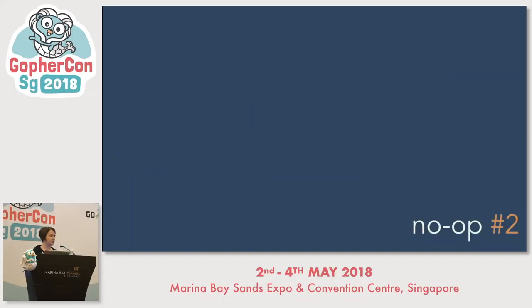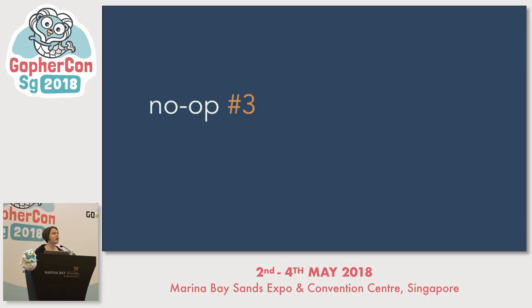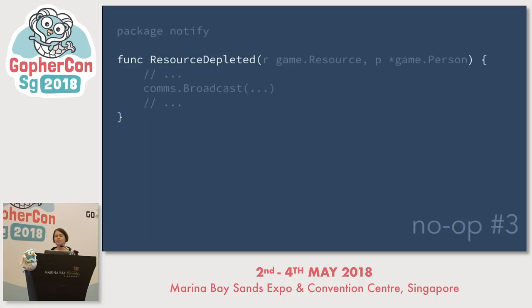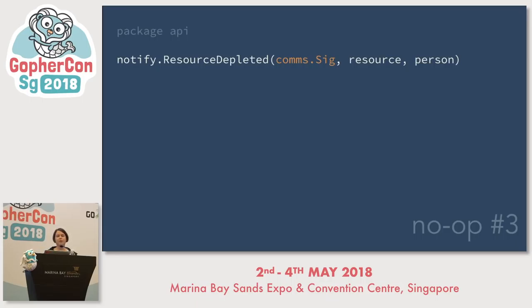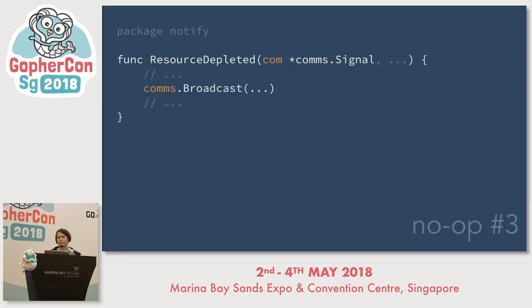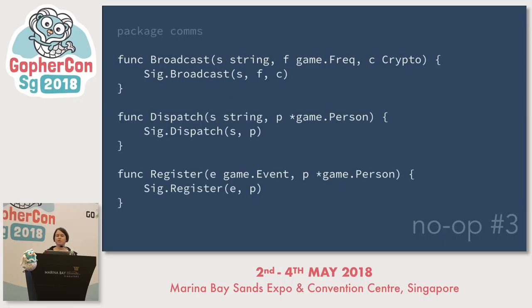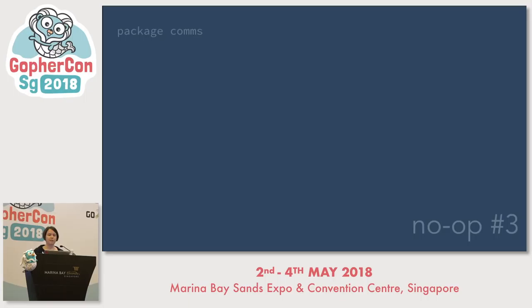Now we want to cut the middleman out. We have this new type and we want our notify package to talk to it directly. To do this, we change the notify function signatures to accept an argument which is a pointer to a value of type Signal. First you add the parameter to the function signature — this is the unsafe part, where the code won't compile because none of the callers are passing in the argument. So we update all the callers, and now the code compiles again and everything works. The body of the function is still talking directly to the comms package — update this to use the comm argument instead. Now the original comms functions are no longer being called and so they can be deleted. That's no-op number three: we injected the dependency into the notify function and got the function to talk to the injected dependency.